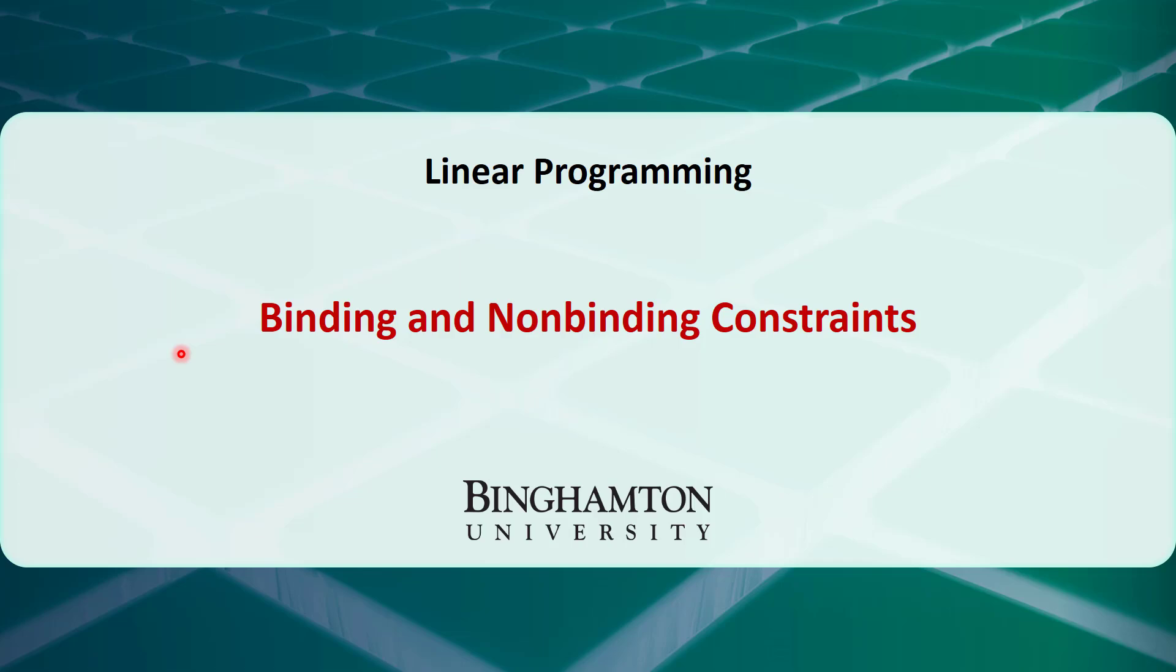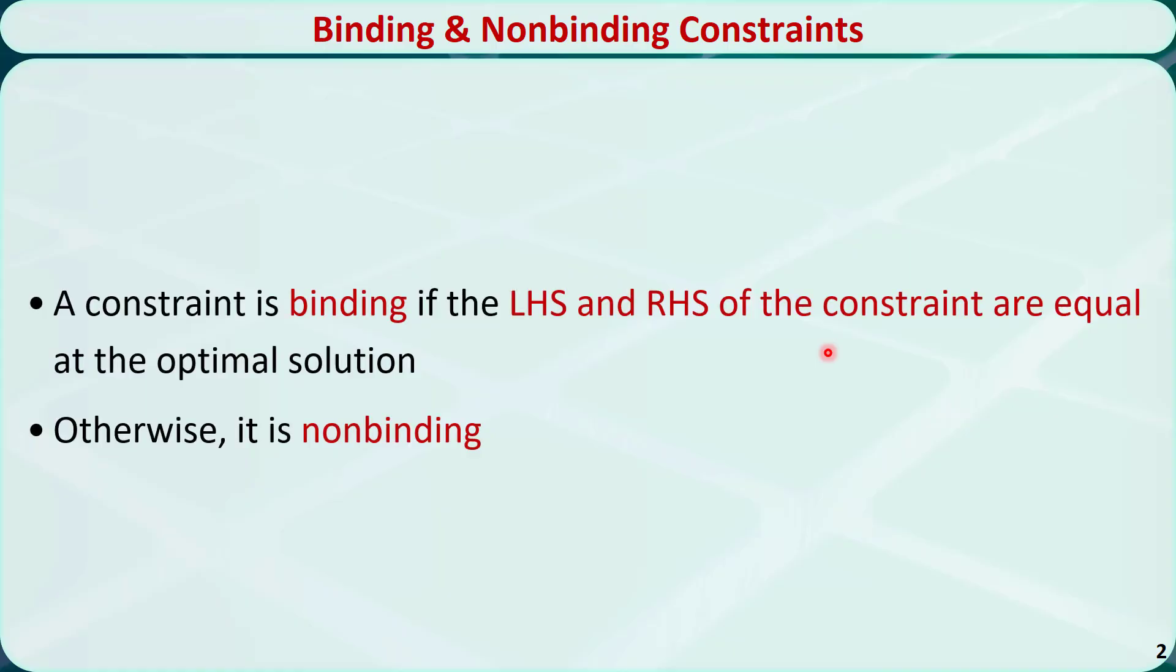In this video, I will talk about binding and non-binding constraints in linear programming problems. A constraint is binding if the left-hand side and right-hand side of the constraint are equal at the optimal solution. Otherwise it's non-binding.